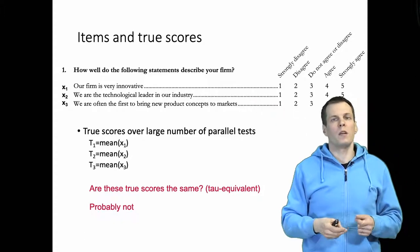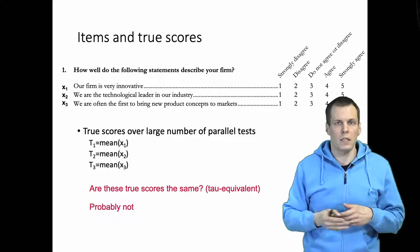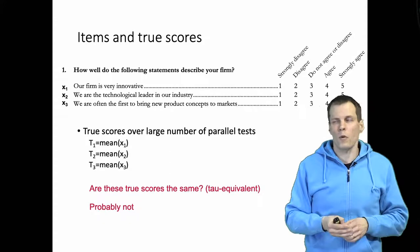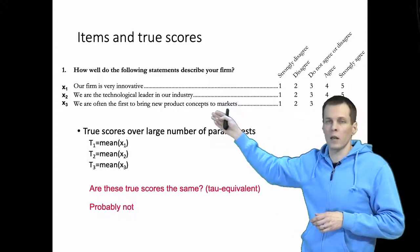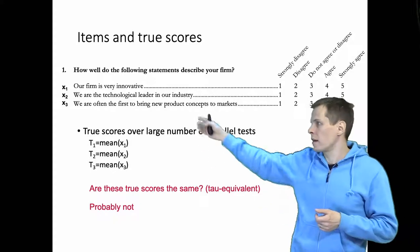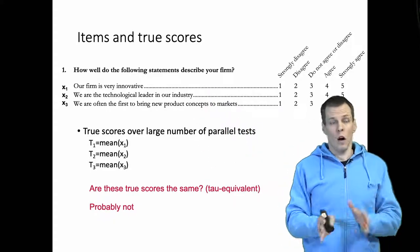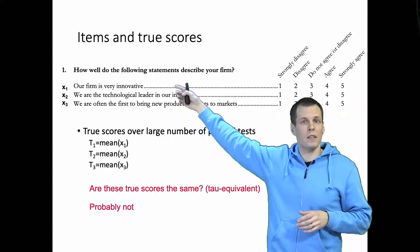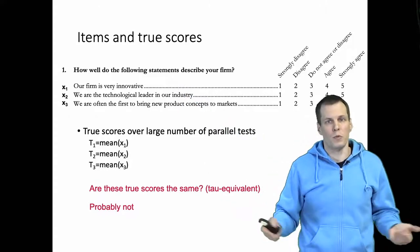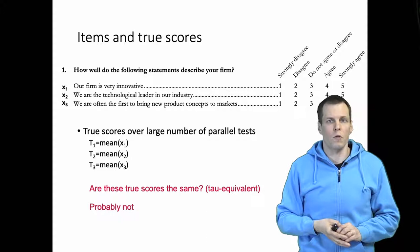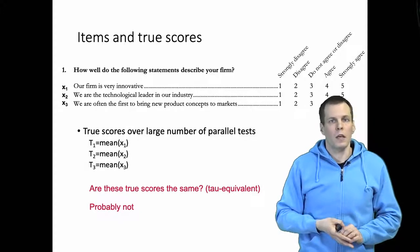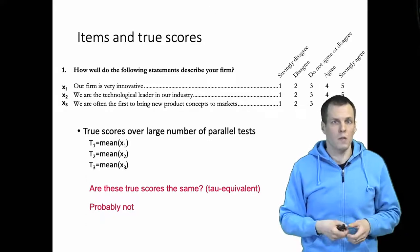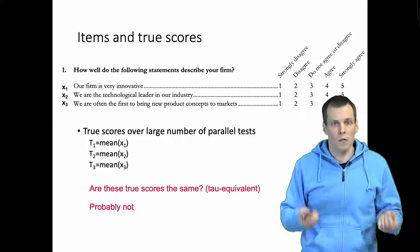It's also possible that there would be some dimensionality in these scales. For example, items x2 and x3 might be more correlated with one another than x1 because they are more concrete, while x1 is more abstract and subjective. That's another reason why the true scores may not be the same. If the true scores are the same, we can use coefficient alpha, but if they're not, we need to pick another reliability coefficient.